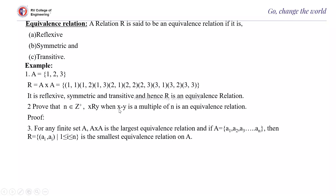To prove it is symmetric: if x minus y is a multiple of N, then y minus x is also a multiple of N. Therefore, when (x, y) belongs to R, (y, x) also belongs to R — so it is symmetric. For transitivity: when (x, y) belongs to R, x minus y is a multiple of N, and when (y, z) belongs to R, y minus z is a multiple of N, which indicates x minus z is a multiple of N. Therefore, (x, z) belongs to R.